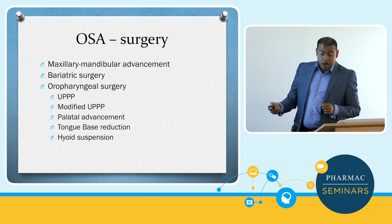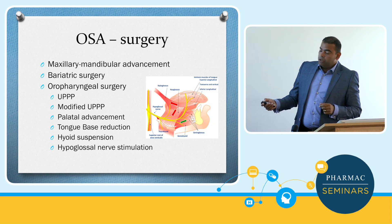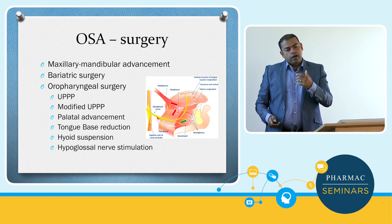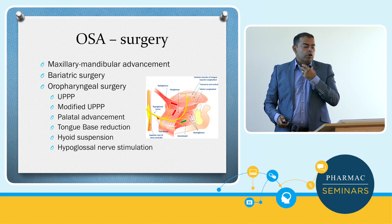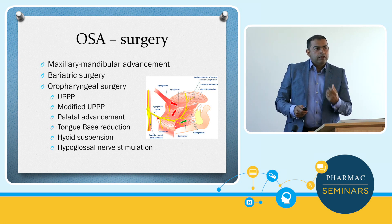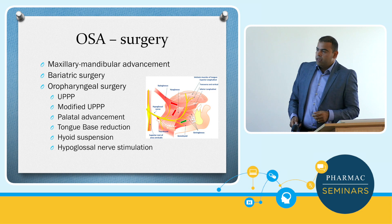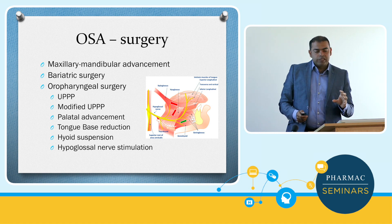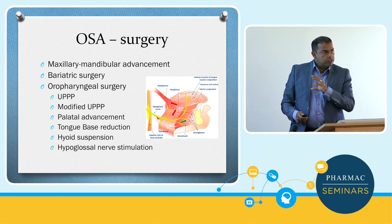The newest kid on the block: a cuff electrode around the terminal branches of the hypoglossal nerve, which stimulates the geniohyoid and the genioglossus — basically pulling the tongue forward. It runs either continuously or based on an electrode that picks up when you're inspiring, so it opens the airway only on inspiration. Five-year results from Europe and the U.S. are fantastic. It has to be really well-selected, and it's not available in Australasia at the moment, but for selected patients this will be the future.